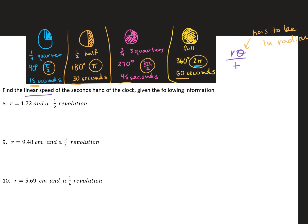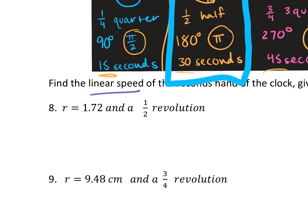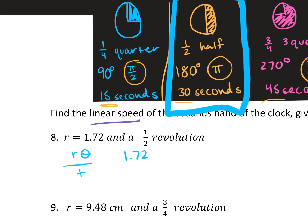For question 8: the radius is 1.72 and we have half a revolution. My formula is V = rθ/t. r = 1.72, θ = π for half a circle, and time for half a clock is 30 seconds. Multiplying all together gives approximately 0.18 — in centimeters per second.